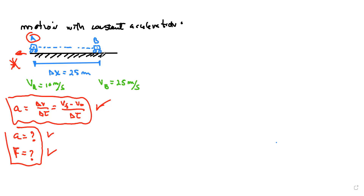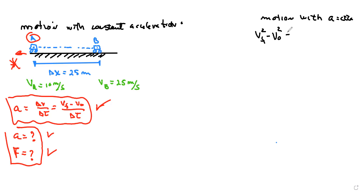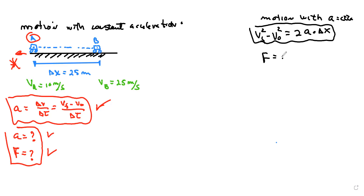Formulas we can use for motion with constant acceleration: the first one is final velocity squared minus initial velocity squared equals two times acceleration times displacement. The second is Newton's second law, which says force equals mass times acceleration. We can use these two formulas to solve our problem.